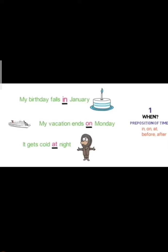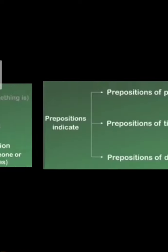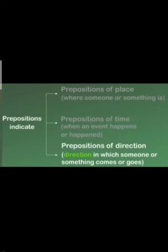I hope you understood preposition of time. Now we are going to learn the last kind of preposition: preposition of direction. Direction means in which direction someone or something comes and goes — isse pata chalta hai ki koi bhi cheez aa rahi hai ya ja rahi hai, kis direction se — usko hum preposition of direction bolte hain.